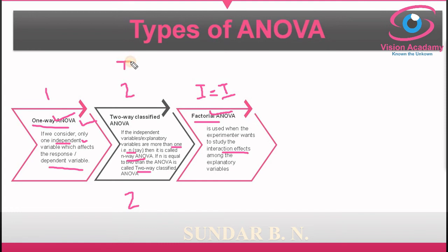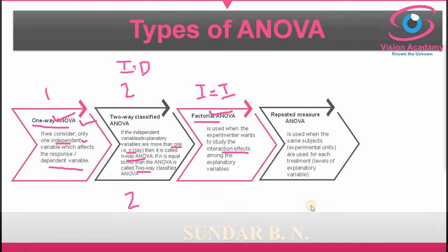In one-way and two-way ANOVA, we study the significant difference between explanatory and response variables. But in factorial ANOVA, the experimenter wants to know the interaction among independent variables themselves. One more type is repeated measure ANOVA. In repeated measure ANOVA, if the experimenter uses the same subject for each type of treatment — that is, the same experimental units for different experimental groups — then it is called repeated measure ANOVA.